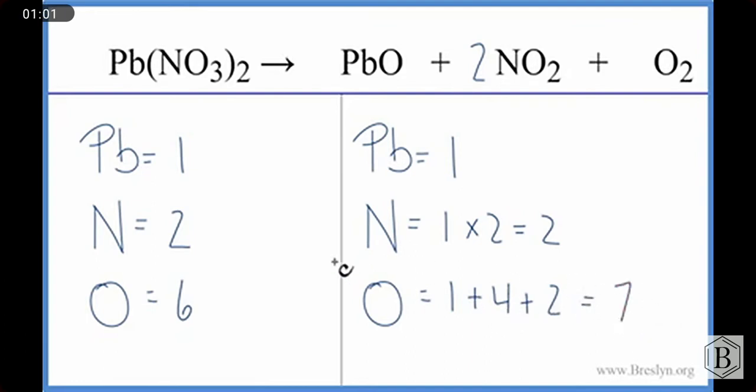So we're almost balanced here. We just have a difference of one, but we have to fix that. At this point, I think I'll double the lead nitrate because I have fewer oxygens here than on the product side, so I'm going to have to do something. I'm going to double it and then see how that works out.